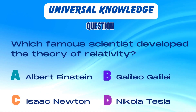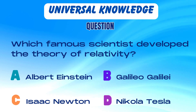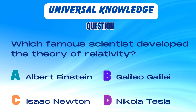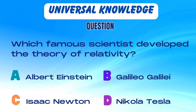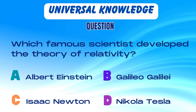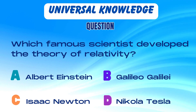Which famous scientist developed the theory of relativity? Is it A. Albert Einstein, B. Galileo Galilei, C. Isaac Newton, or D. Nikola Tesla?